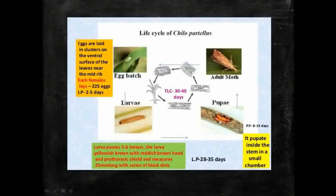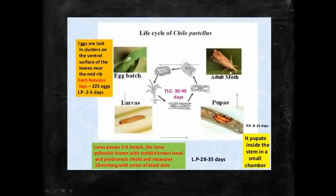The next stage is the pupal stage. The fully grown larva or caterpillar then pupates inside the stem in a small specially constructed chamber, which provides protection. The larval period takes 28 to 35 days. Pupation takes eight to fifteen days to complete the formation of an adult inside the pupal stage.